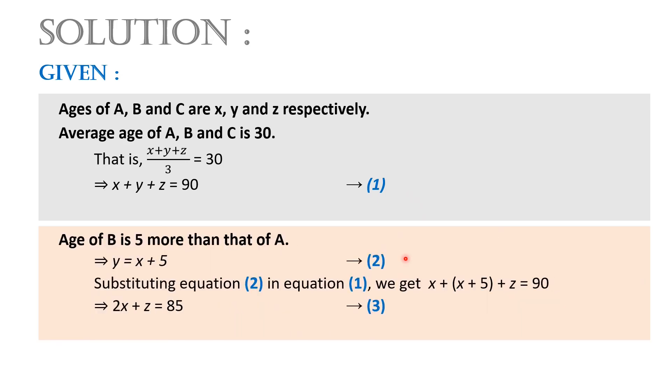It is also given that age of B is 5 more than that of A. This implies that Y equals X plus 5. Let this be equation 2. Now let us substitute equation 2 in equation 1. We get X plus X plus 5 plus Z equals 90. This can be written as 2X plus Z equals 85. Let this be equation 3.